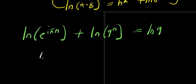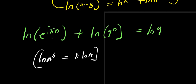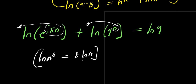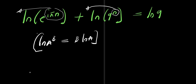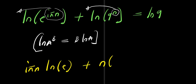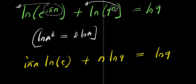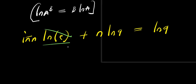So from here, if you have natural log of a to the power b, this equals b times natural log of a. So i·π·n would come in front, and n would come in front of the other term. So what you are going to have will be i times pi times n times natural log of e, plus n times natural log of 9, equals natural log of 9. And it is worthy to know that natural log of e equals 1.